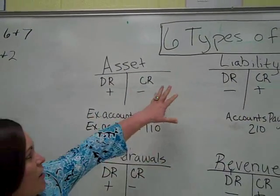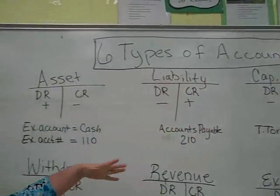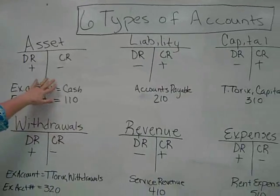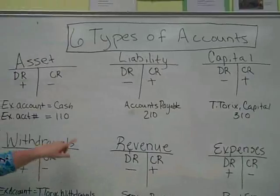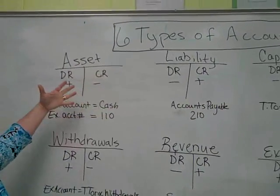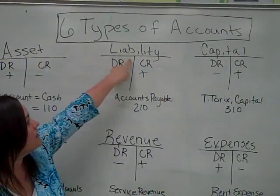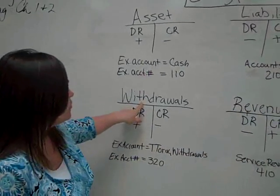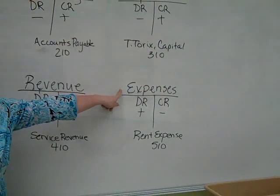This is an illustration of the six types of accounts. On your first big test covering chapters one through four, you will have six blank T-accounts. Each of these is a T-account, and I identify six types: asset, liability, capital, withdrawals, revenue, and expenses.